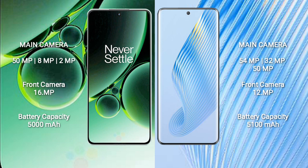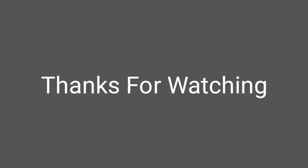OnePlus Nord 3 has a 5000mAh battery with 80W fast charging support. Honor Magic 5 has a 5100mAh battery with 66W fast charging support.